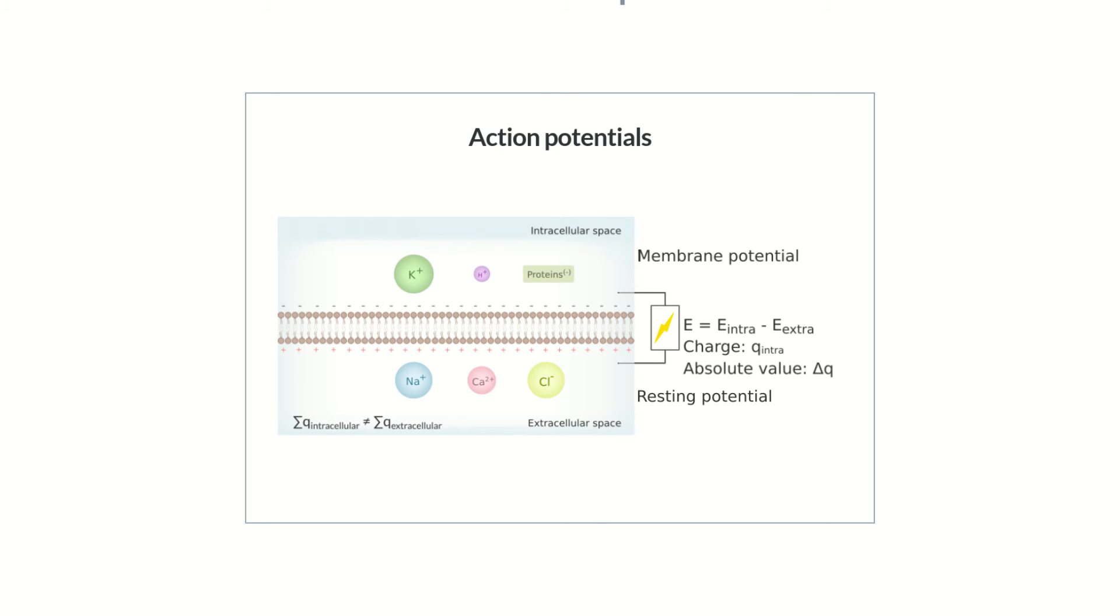If charged substances are transported across the membrane, changing the net charge on both sides, the membrane potential also changes accordingly. The type of ions involved in producing an action potential depends on the cell type.